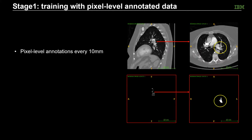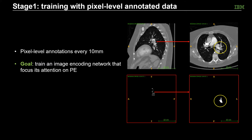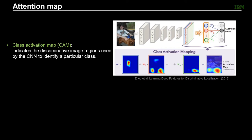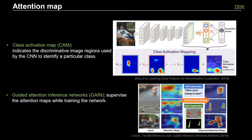Our pixel-level annotations were labeled by radiologists every 10 mm from CT volumetric images. Our goal here is to utilize those pixel-level annotations to train an image encoding network that focuses attention on PE. Recently, class activation map, also known as attention map, has been used to interpret convolutional neural networks. The attention map can indicate the discriminative image regions used by the CNN to identify a particular class. Later, guided attention inference networks (GAIN) have been developed, which shows that attention maps can be supervised while training the network.